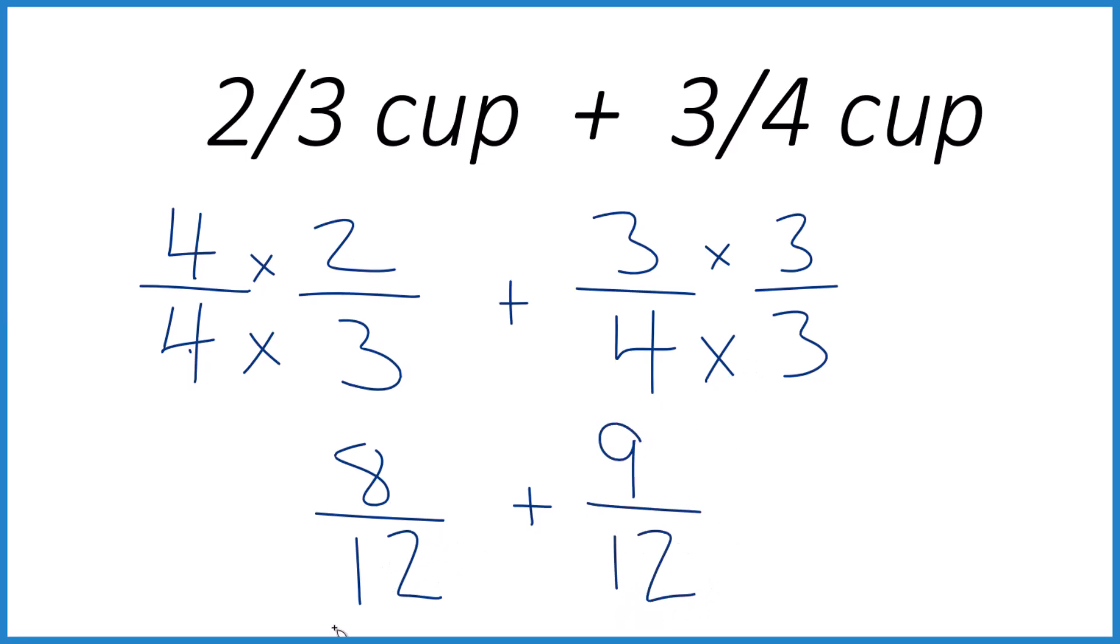So now we have the same denominator. We just add the numerators and bring the denominator across. Eight plus nine, that is seventeen. And twelve, we just keep that the same, keep the denominator the same.